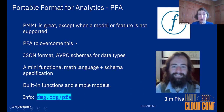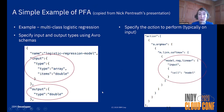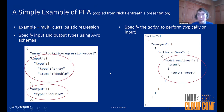PFA is JSON-based, using Avro schemas for data types. Instead of describing models it describes the scoring procedure — it is a mini functional math language plus schema specification, with built-in functions and simple models as building blocks. You can find information about it on the DMG website. My colleague Nick Pentreath worked with PFA and created an open source library for PFA export from Spark ML models. This example shows a logistic regression model in PFA, which looks very different from PMML.